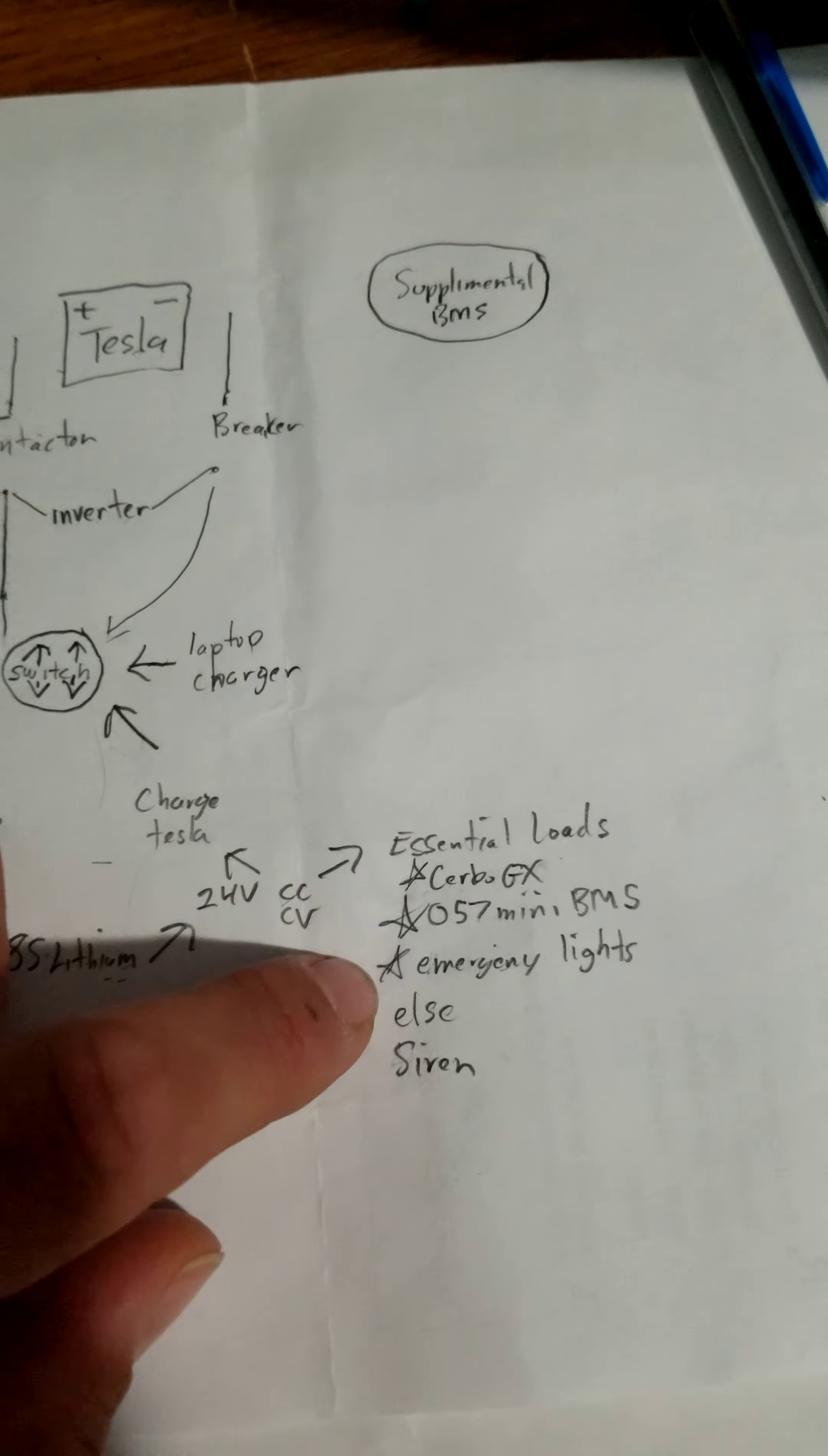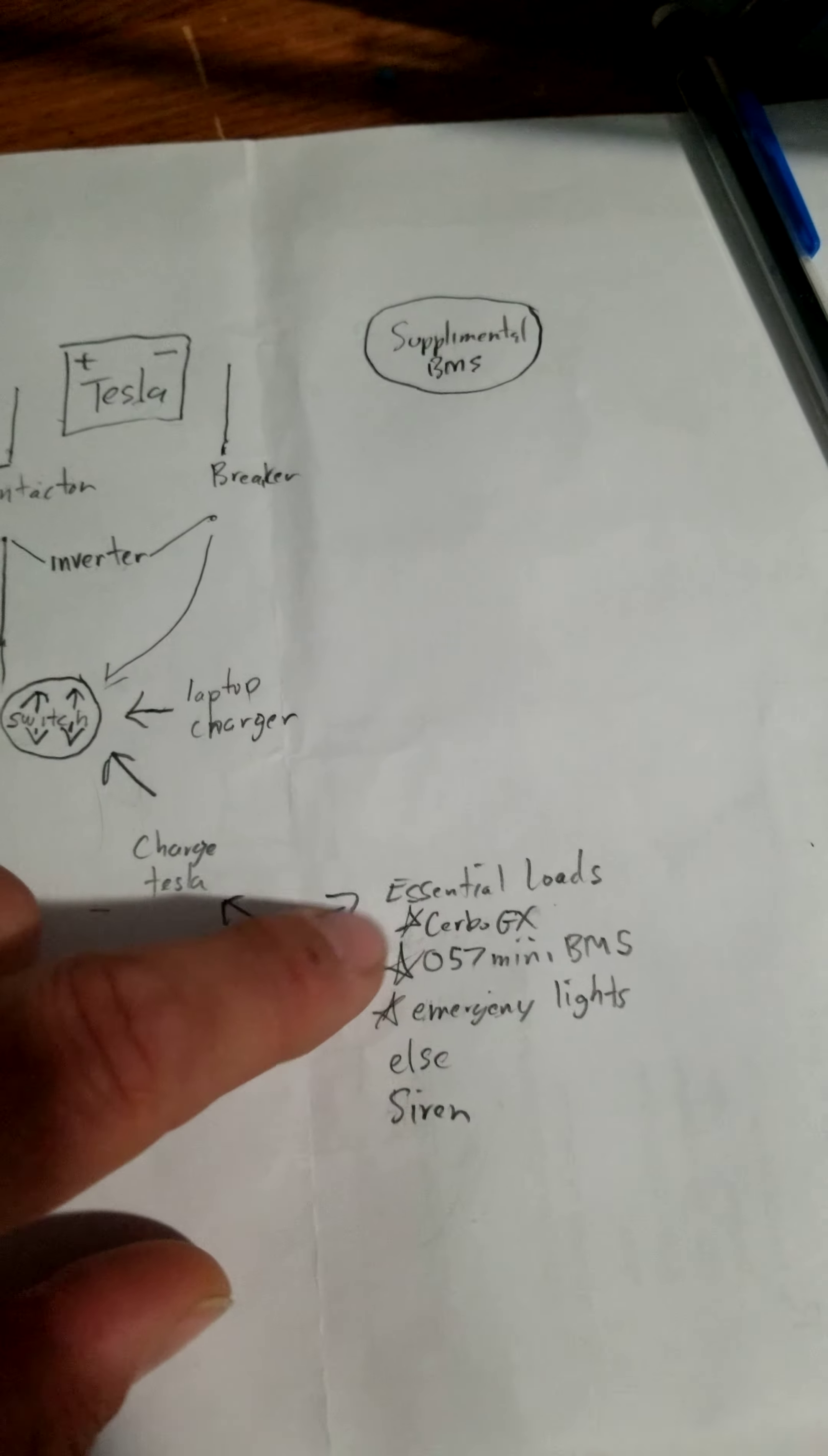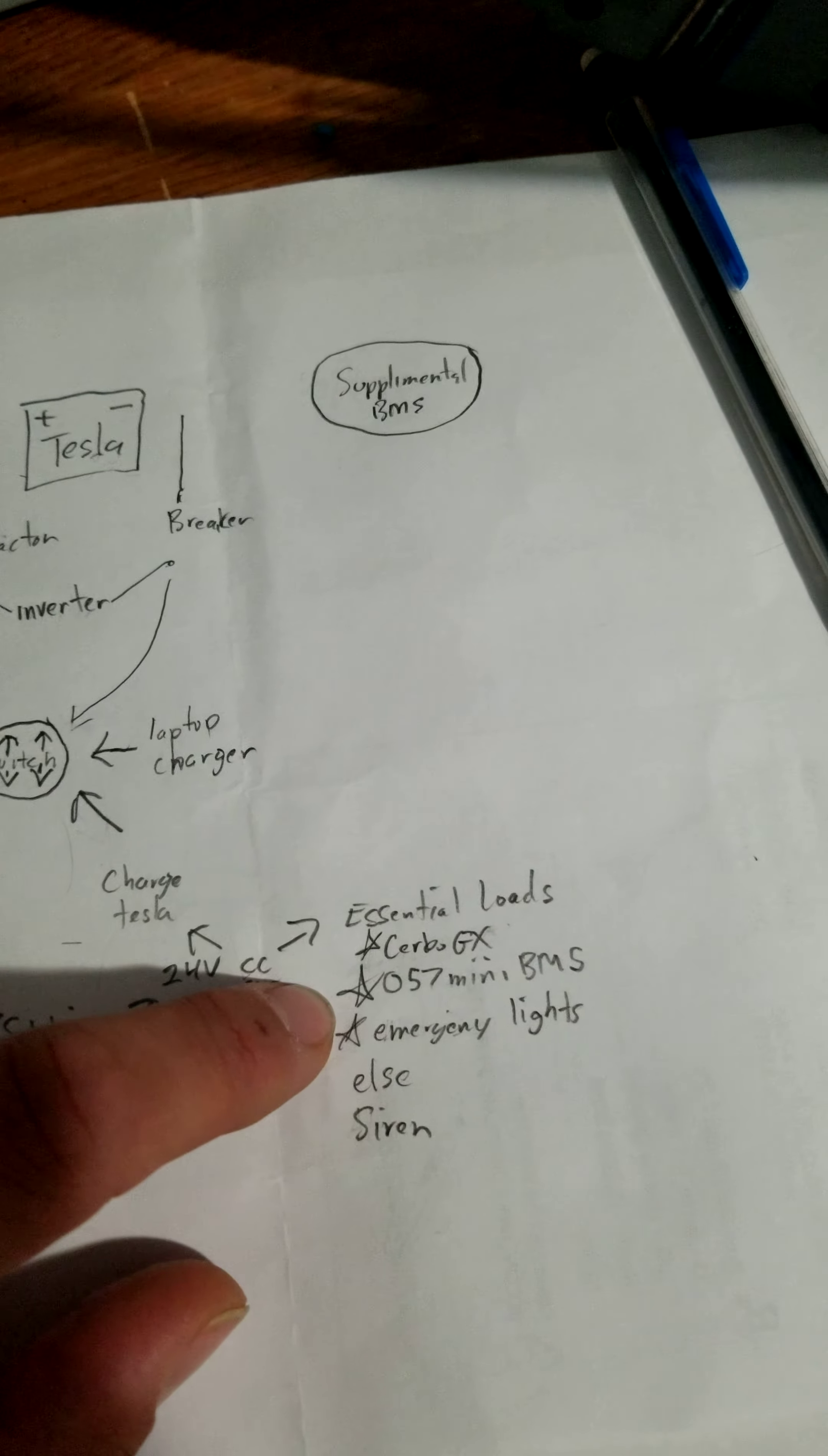It would also power an emergency light so if you want to have a little strip of LEDs so you can see where you are in the van, it would power that as well. And if any of this stuff fails it's actually going to set off a siren because this is very much essential equipment right there.